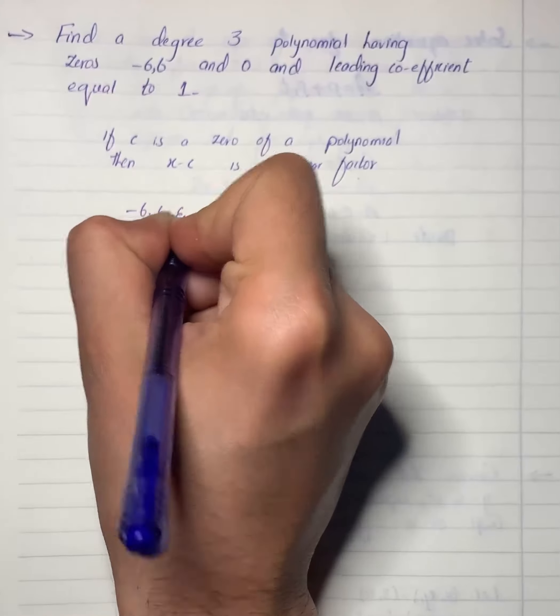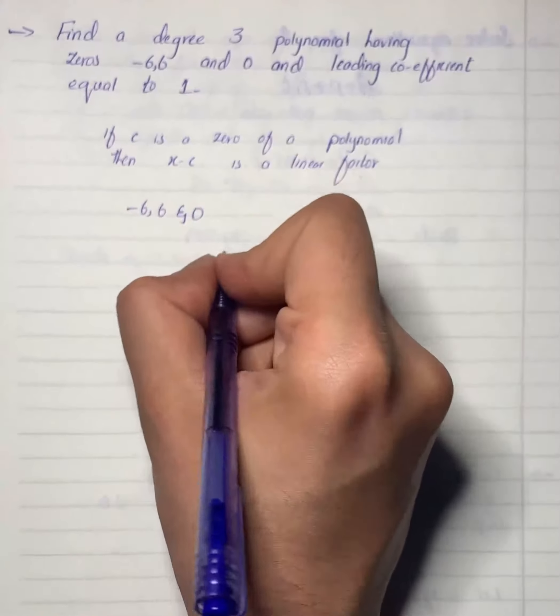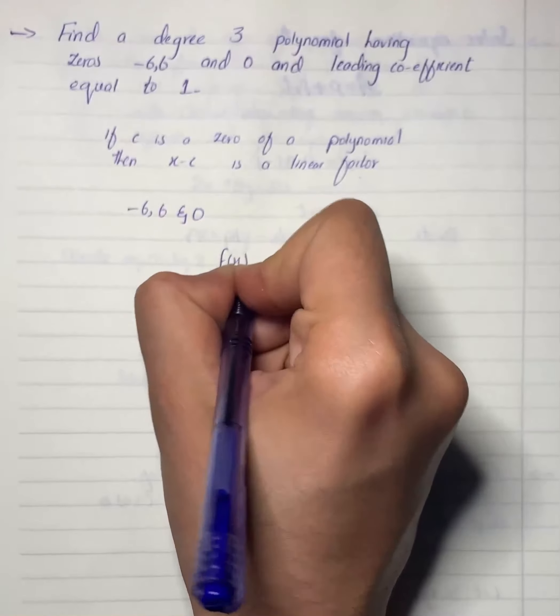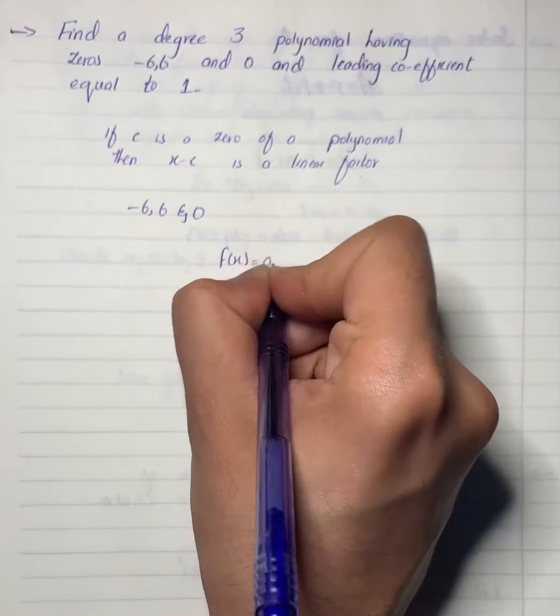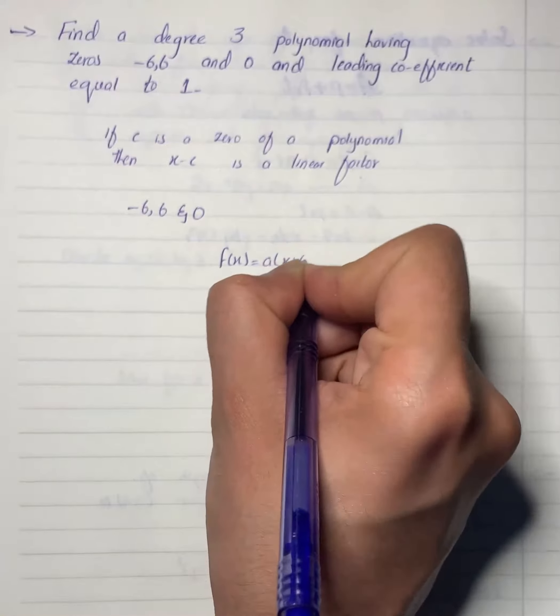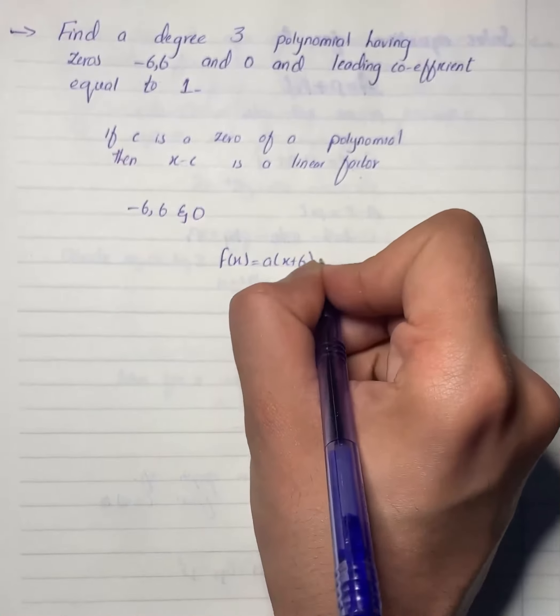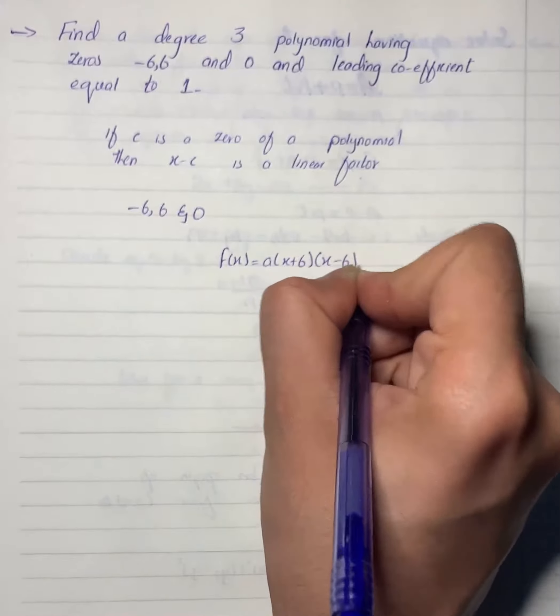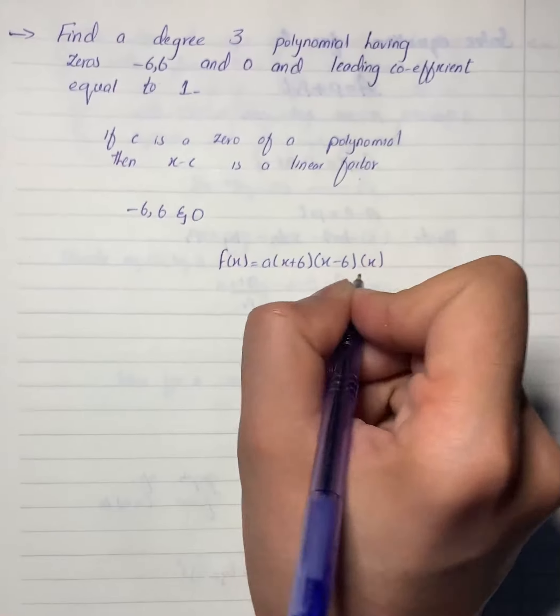We can write f(x) = a(x + 6)(x - 6)(x). We will expand.